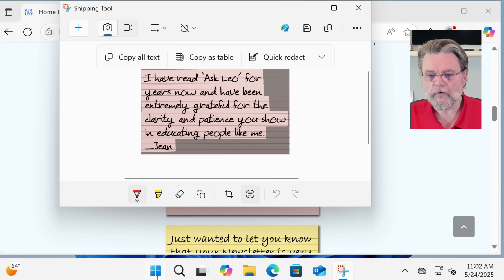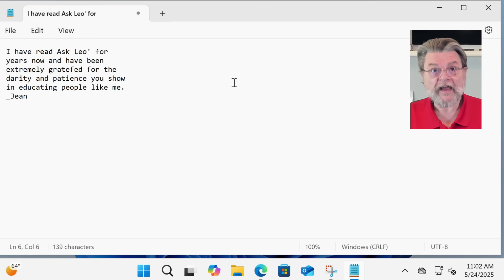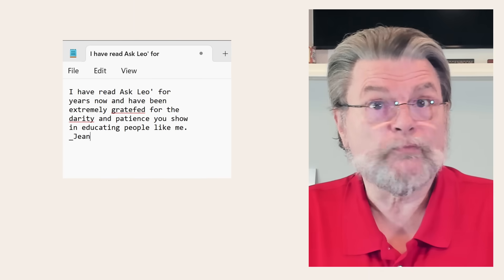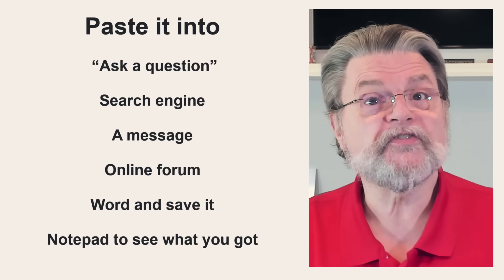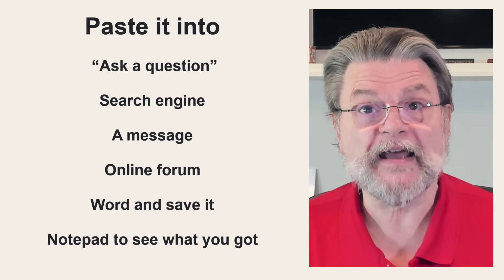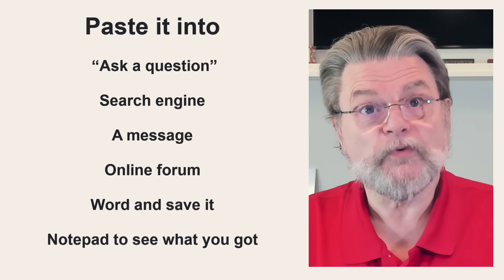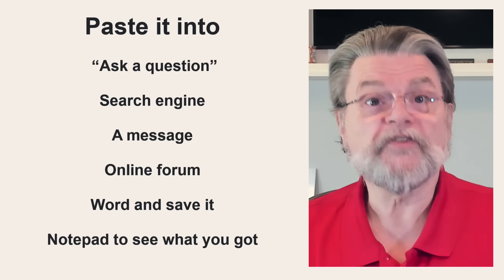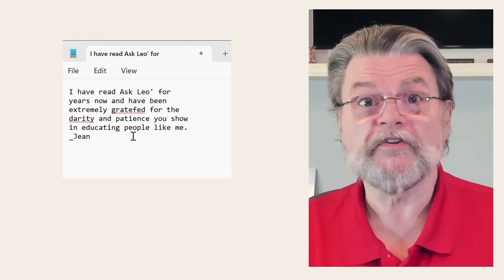A very quick way to confirm that is to run Notepad and just paste the text in there. And there it is — that is the text in text format. It is now selectable in whatever way you want. You can use it for whatever you're trying to do: paste it into an Ask a Question form here on Ask Leo, paste it into a search engine as part of a search query — if this were an error message, that would be one way to get an answer — paste it into a message you're composing, an online forum posting, a Word document, or as we just did, into Notepad to see just what you got. Since Notepad doesn't support images, the only thing that's going to show up here is text.